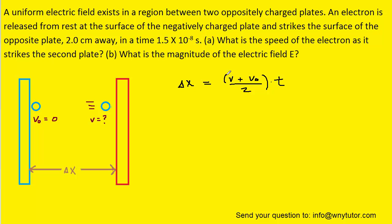We can solve this equation for the final velocity by first multiplying both sides by 2. We could then divide both sides by t. And since the initial velocity was zero, we can eliminate this term from the equation.